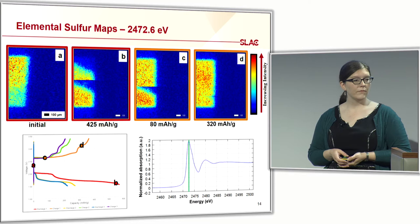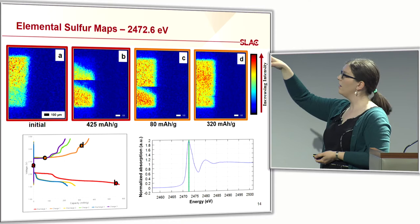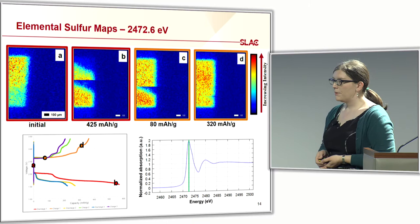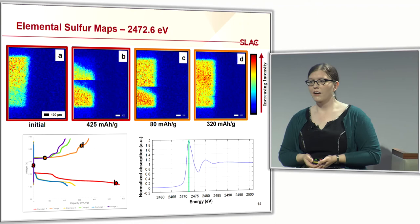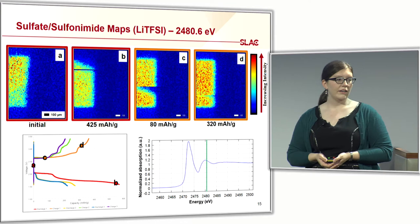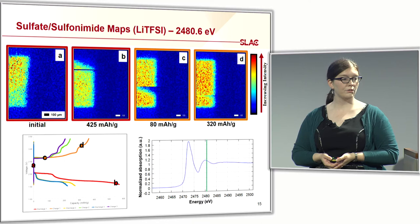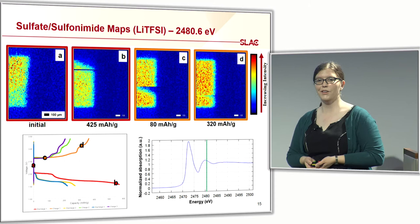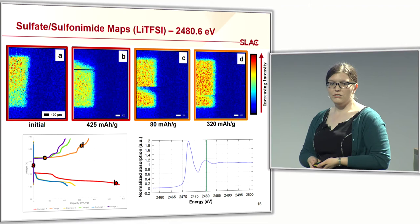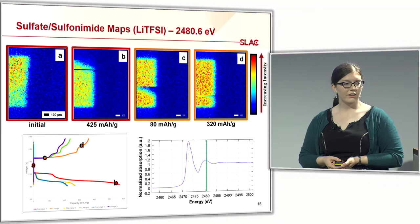The intensities have also changed a bit, and you can see that time element I mentioned going from bottom to top in the map. This becomes less obvious in subsequent cycles and is something I'll be optimizing in future work. Because we're using a PEO/LiTFSI binder, we can also track the sulfonimide groups in the LiTFSI, which appear around 2480.6 eV. Again we have the discontinuities and changes during the first discharge and charge, with recovery at the end of the second charge.